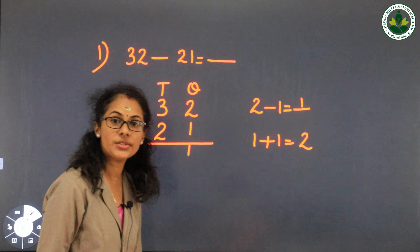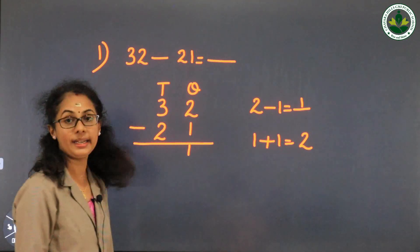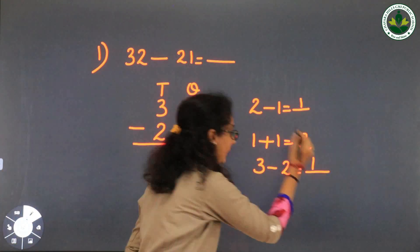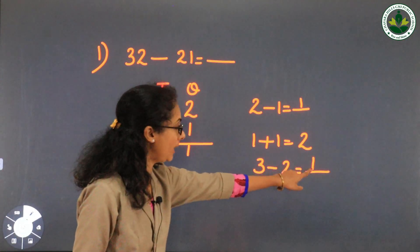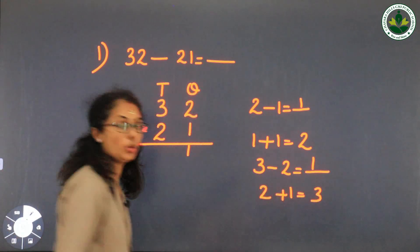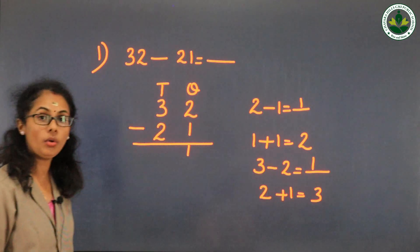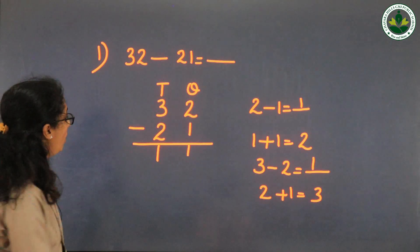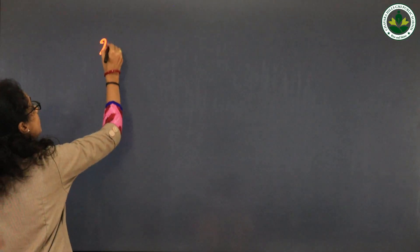Next, tens place: 3 minus 2 equals 1. Write that 1 in the tens column. So the answer is 11. Question number 2.